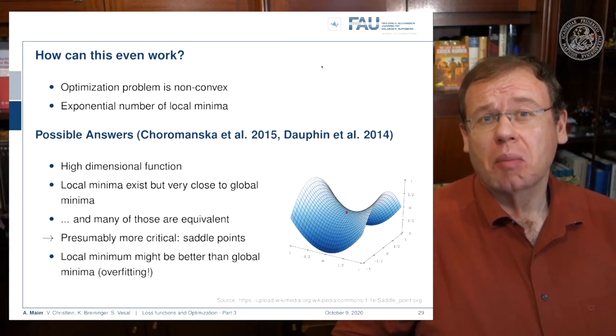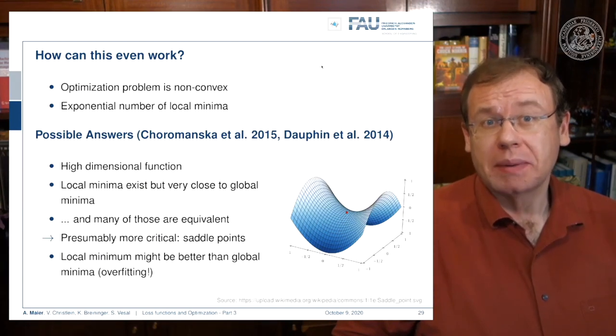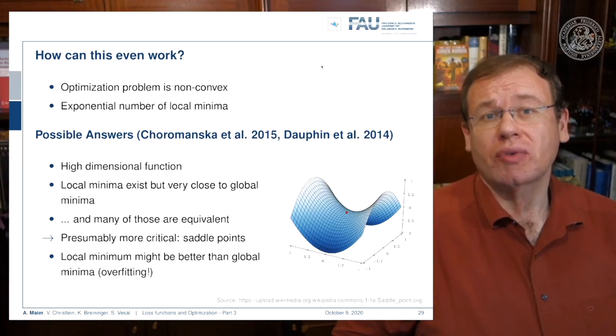What is probably more of a problem are saddle points. Also, the local minima might even be better than the global minimum because the global minimum is attained on your training set, but in the end you want to apply your network to a test data set that may be different. Actually, a global minimum on your training data set may be related to an overfit—maybe this is even worse for the generalization of the trained network.